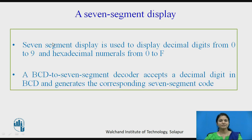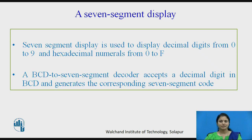A 7-segment display is used to display decimal digits from 0 to 9 and hexadecimal numerals from 0 to F. A BCD to 7-segment decoder accepts a decimal digit in BCD and generates the corresponding 7-segment code.